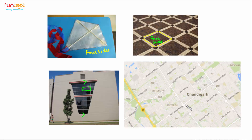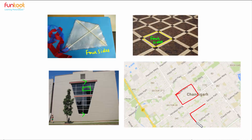One more example of quadrilaterals can be seen in the map of Chandigarh. The sectors in the map are in the shape of quadrilaterals. Chandigarh is a very well-planned city, and that is why all the sectors look like quadrilaterals.